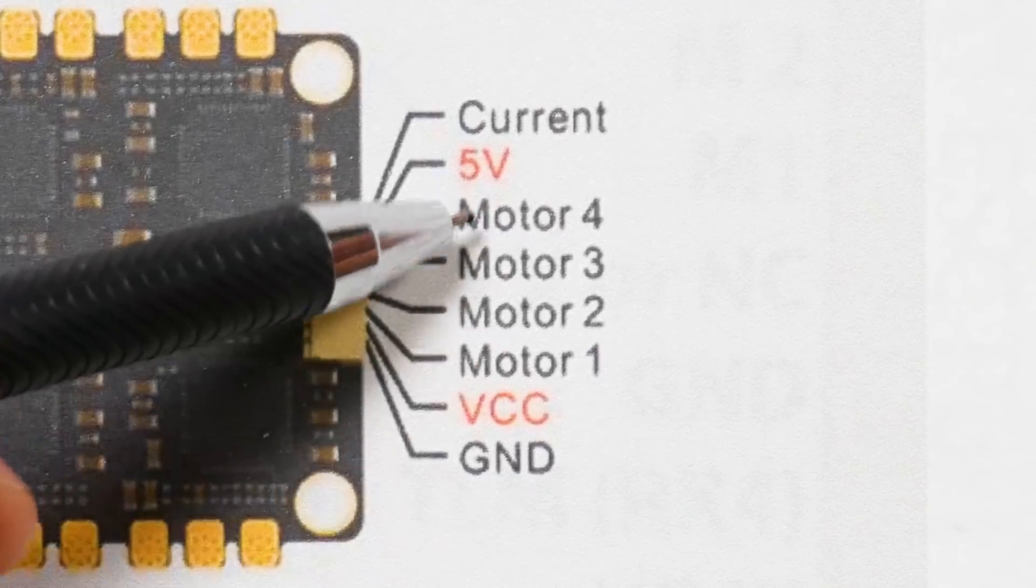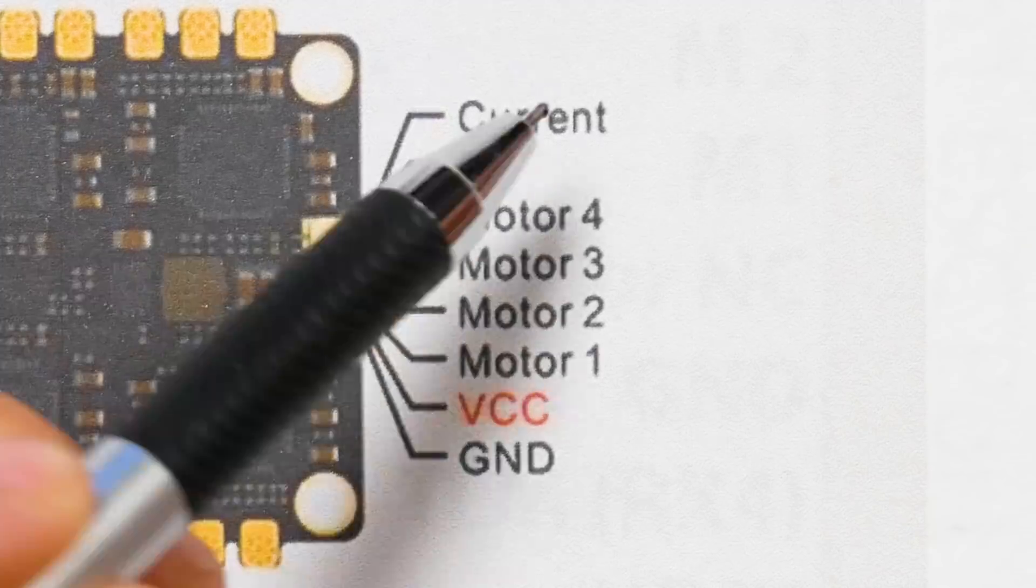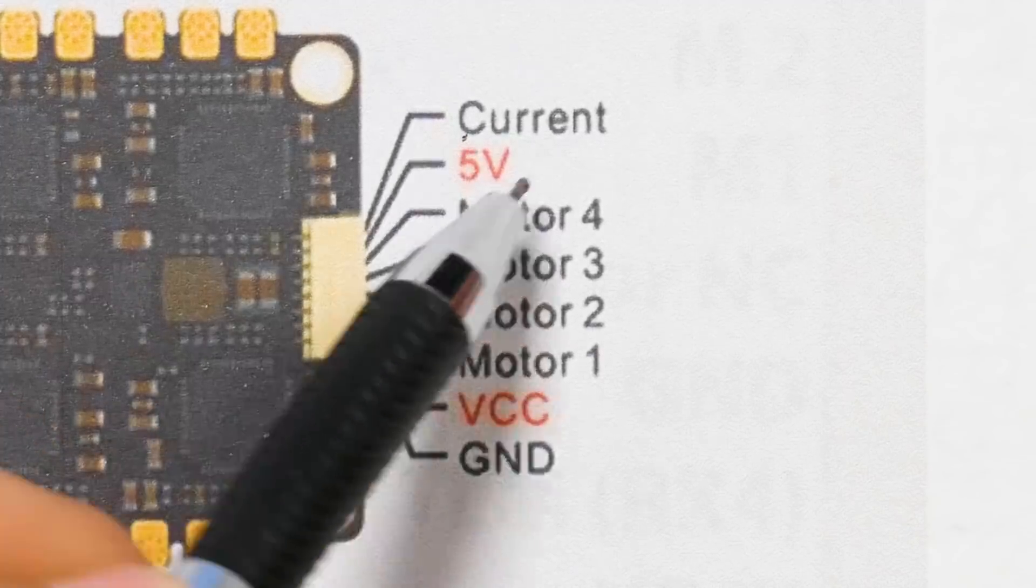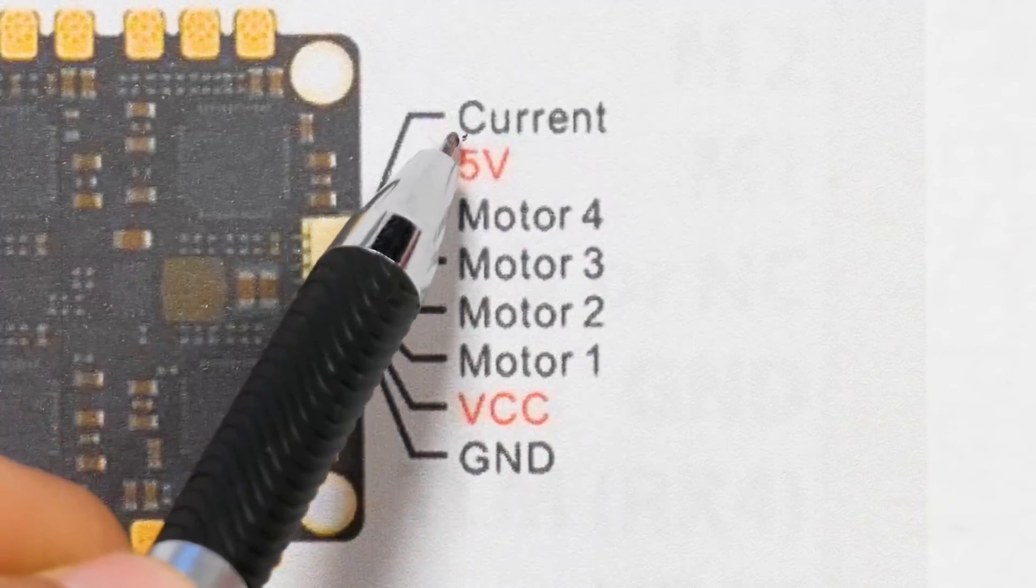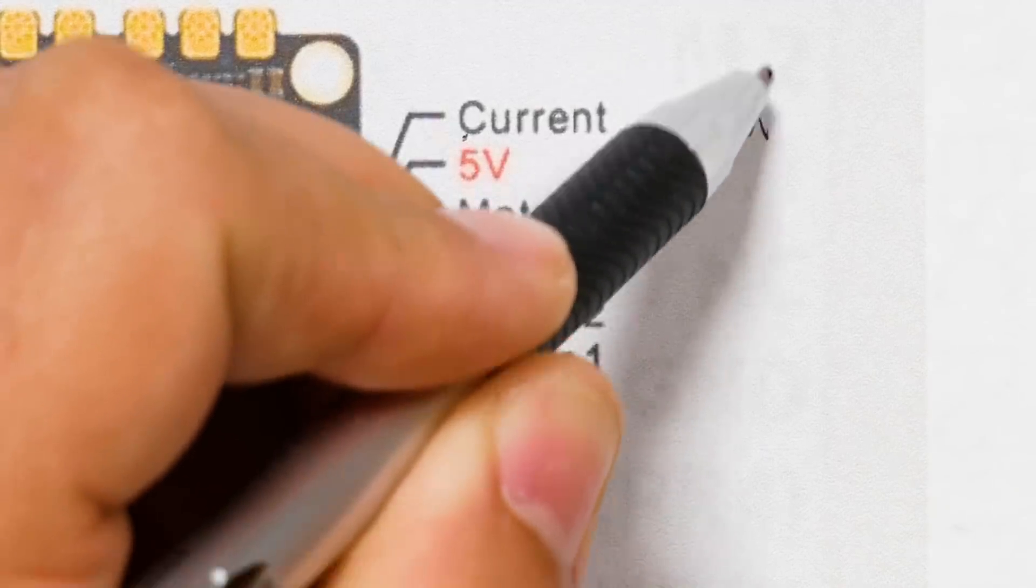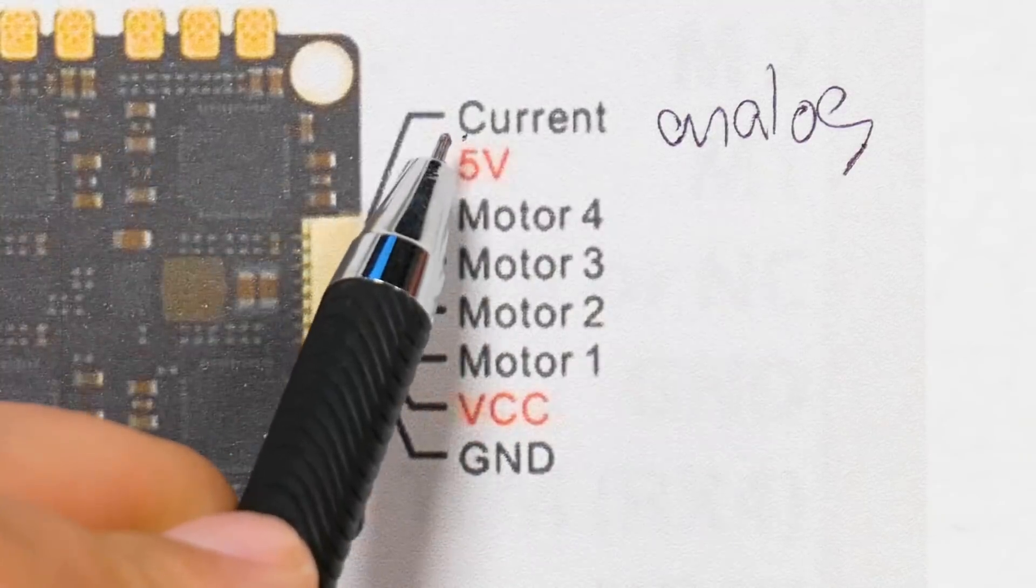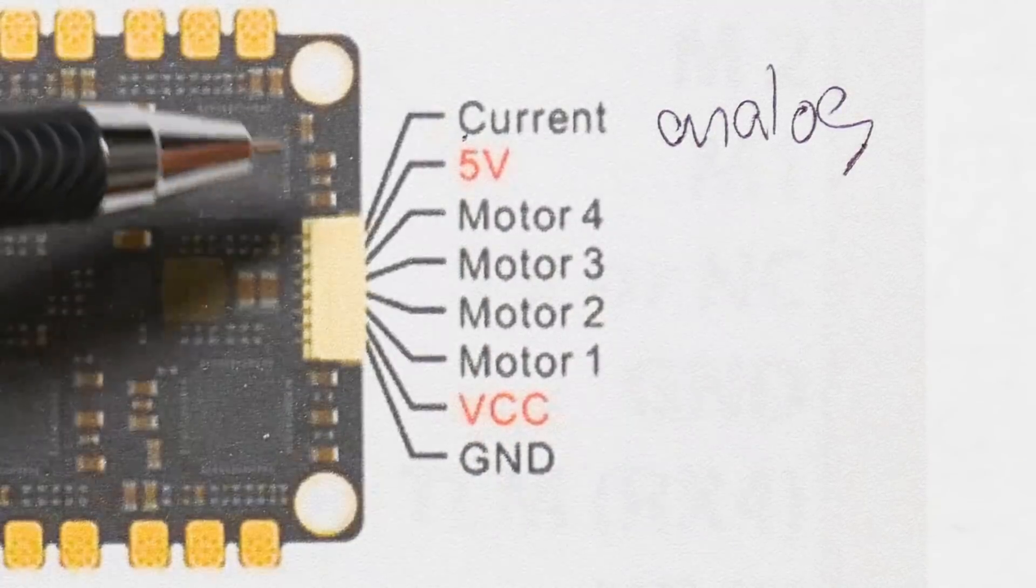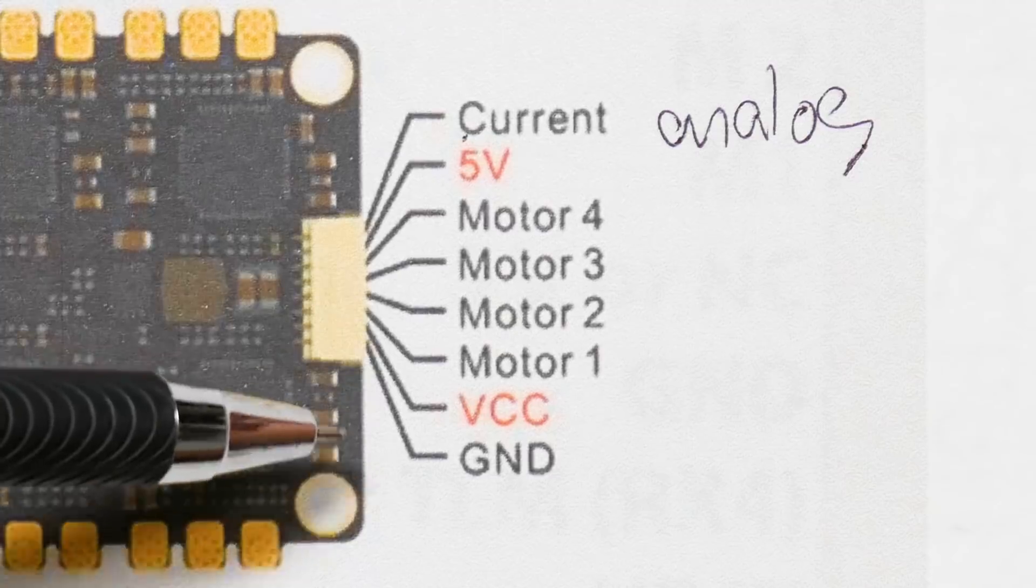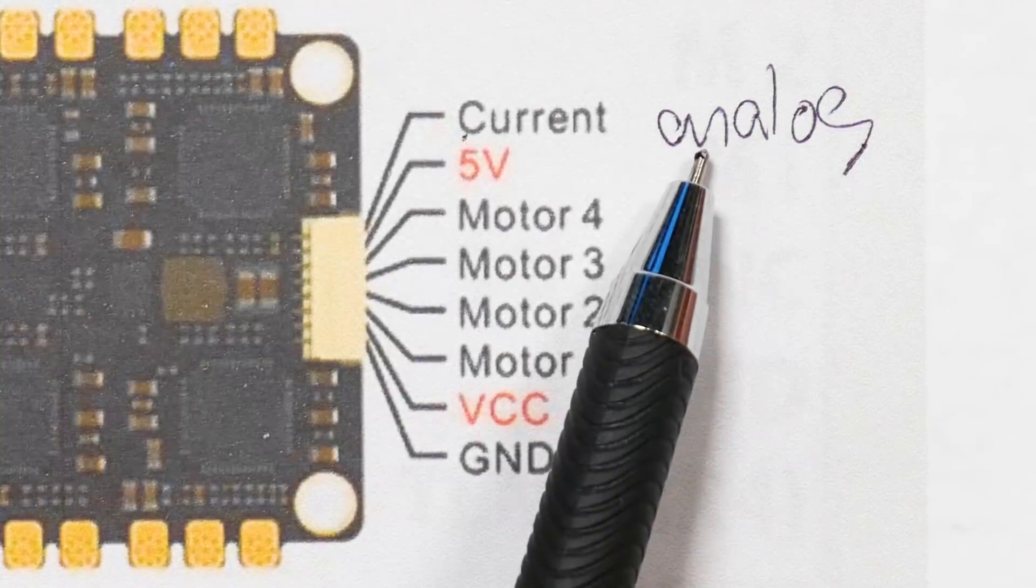So if we look at the pinout for the DALRC engine, we see we've got the four signal outputs. And we've got a current output. Now, because that says current and not telemetry, that is analog current sensing. That's going to be the 0 to 3.3 volt current sensing. This ESC does not appear to have BLHeli_32 ESC telemetry output. And so we're going to need to use analog current sensing.